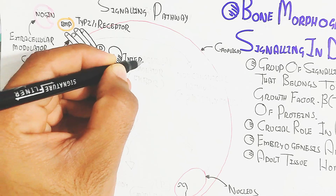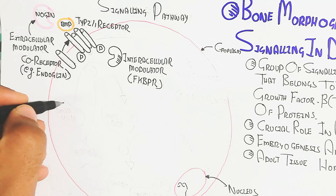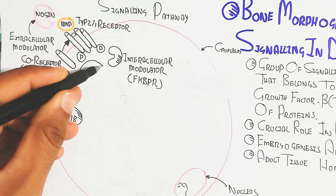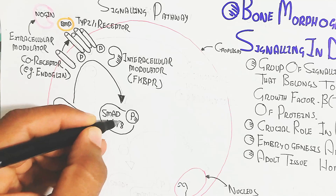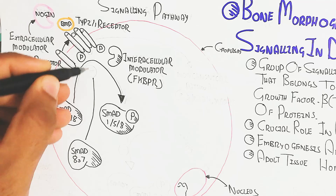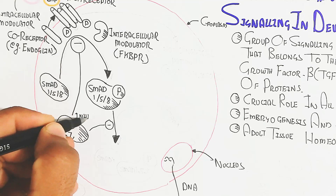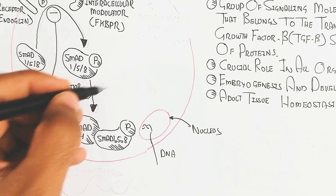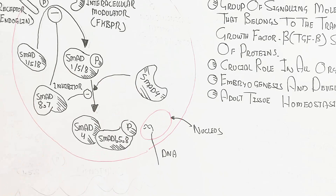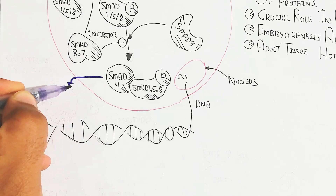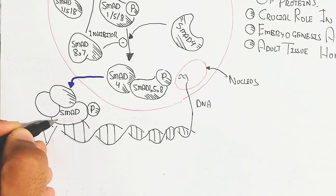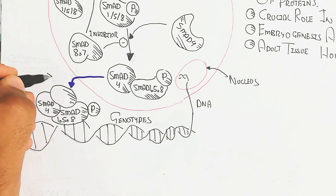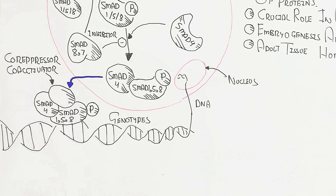The intracellular modulator is the FKBP receptor. The intracellular SMAD proteins 1, 5, and 8 become phosphorylated after BMP binding via autophosphorylation. TGF-beta can also bind to form this activity. The inhibitory SMADs are SMAD 6 and 7. SMAD 1, 5, 8 phosphorylation leads to conjugation with SMAD 4, forming a transcription factor complex that binds a specific DNA region to drive gene expression — genotype leading to phenotype.